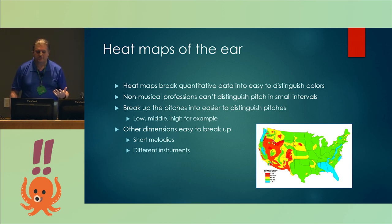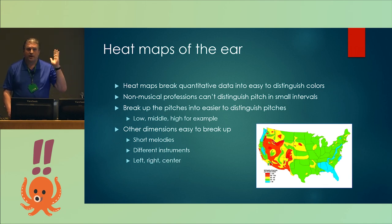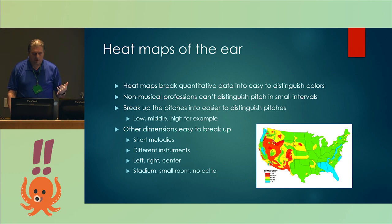Other dimensions are easy to break up. Short melodies - we already did the John Williams thing with those little melodies. Different instruments - if a different instrument is playing a different melody, that's two dimensions that we can hear at a time simultaneously. Left, right, and center - if we hear on the left it means something, we hear on the right it means something, we hear it in the center it means something. Hearing all three might mean something else. The stadium, the small room, and the no echo - these are three different dimensions. So we would break up and discretize the data into these ideas and then be able to simultaneously put all this information together.